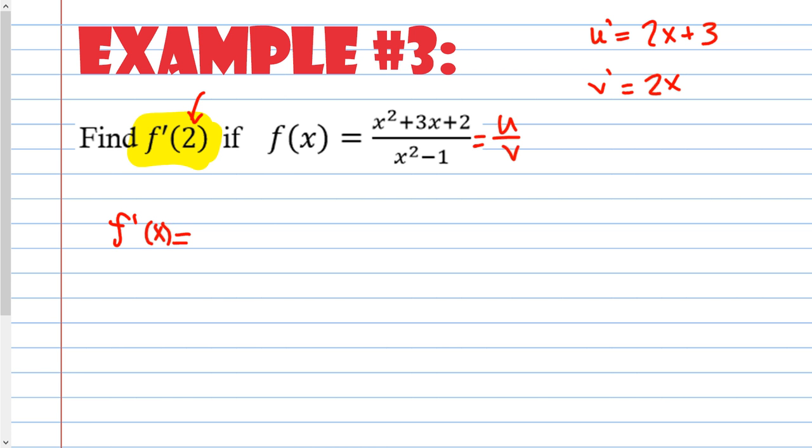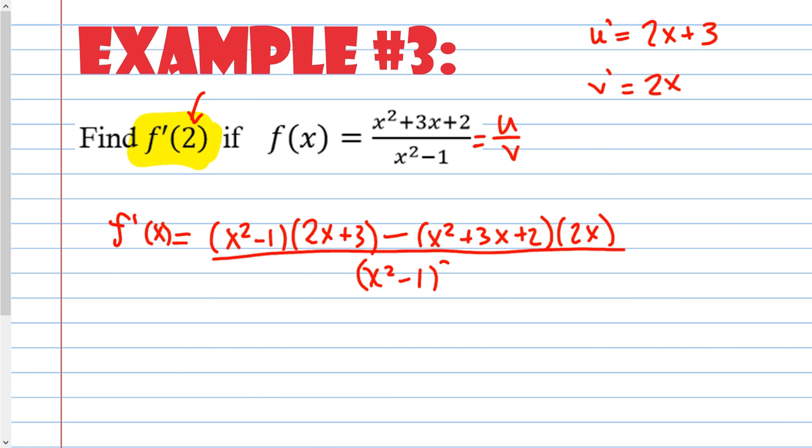So low d high minus high d low over low times low. So low, the derivative of the top one, which is 2x plus 3 minus, so this is low, d high minus high. So the top function, x squared plus 3x plus 2 times v prime. So 2x divided by x squared minus 1 squared. So now, f prime of 2. See, I don't have to simplify if I have an x to plug in. Please, don't ever bother simplifying, because you're just giving yourself more opportunities to make mathematical errors or arithmetic errors.